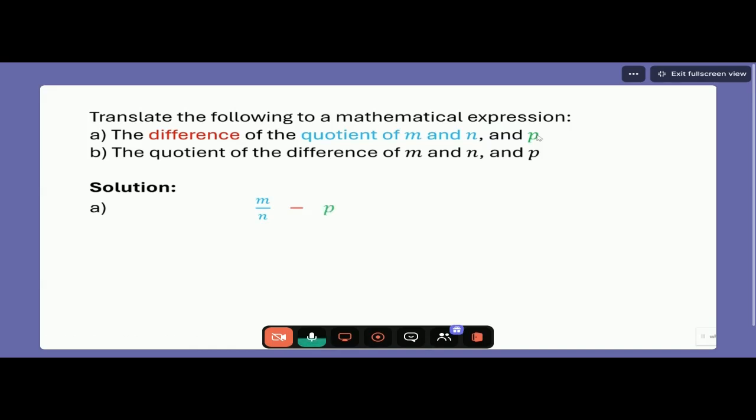So there we go. Let's write that as a final answer. M over N minus P is the difference of two things, the quotient of M and N and P.